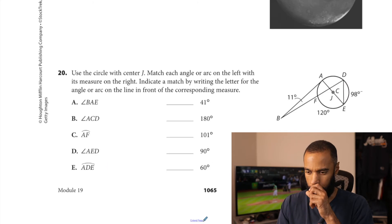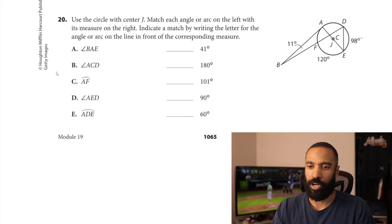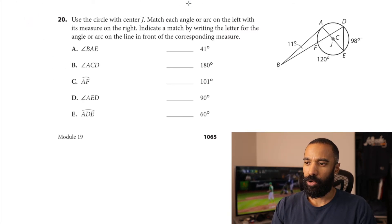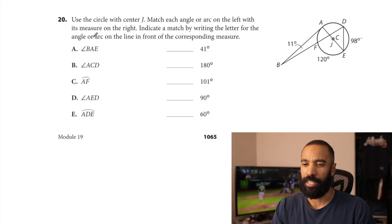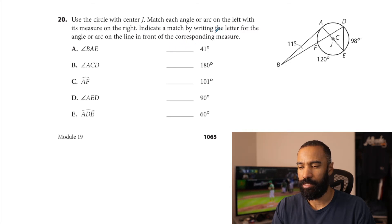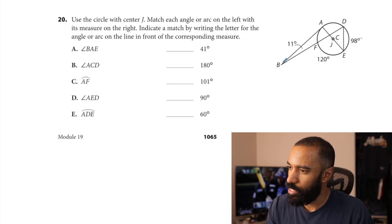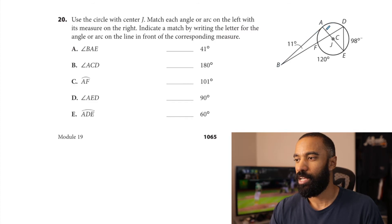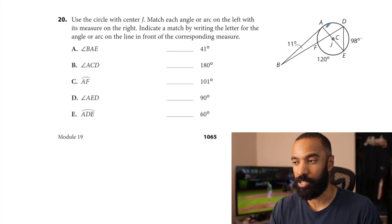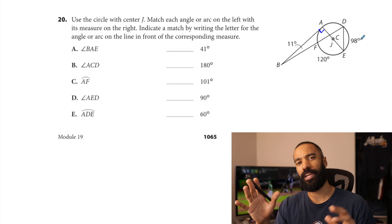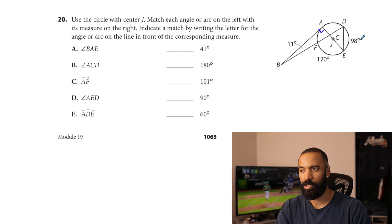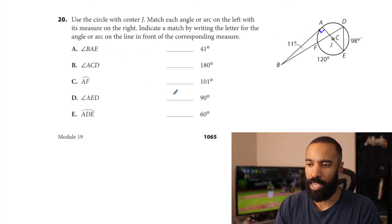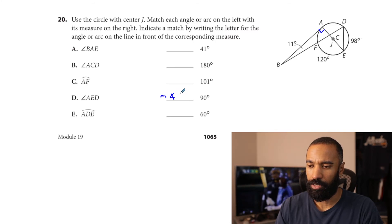I'm doing just one more problem here — number 20. Use the circle with center J. Match each angle or arc on the left with its measure on the right. Indicate a match by writing the letter for the angle or arc on the line from the corresponding measure. So angle BAE — let's hunt it down. BA as a line is a tangent line. We talked about this before: a radius from the center to a tangent intersects with a tangent line to create a 90 degree angle. It constructs a semicircle right there. So measure of angle BAE is 90 degrees.